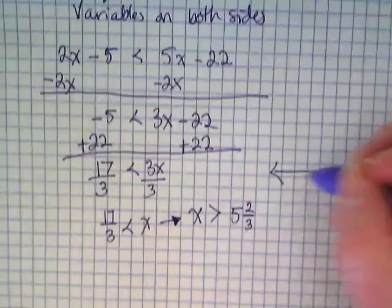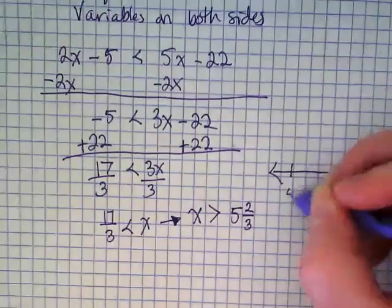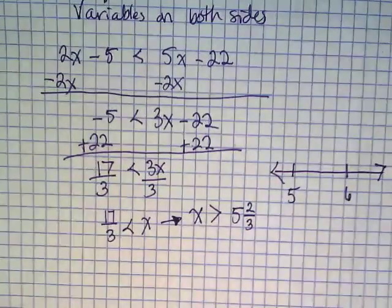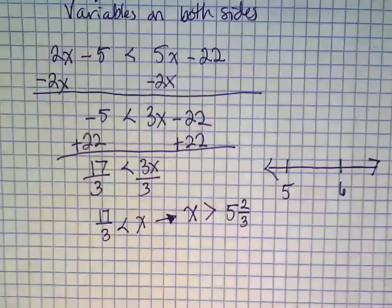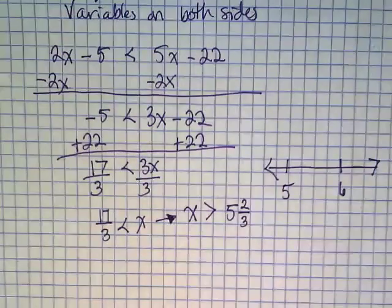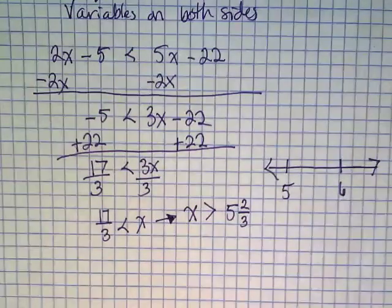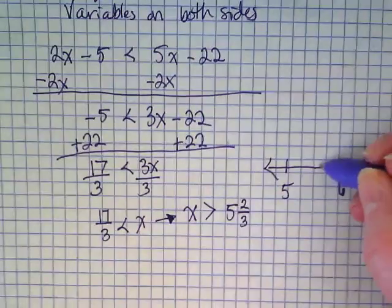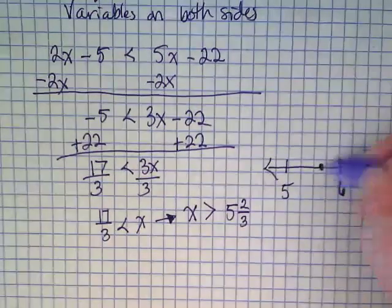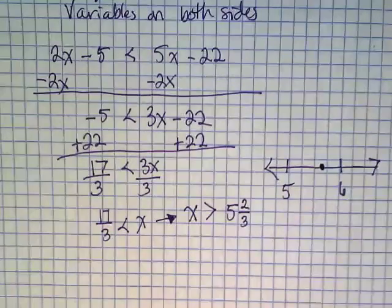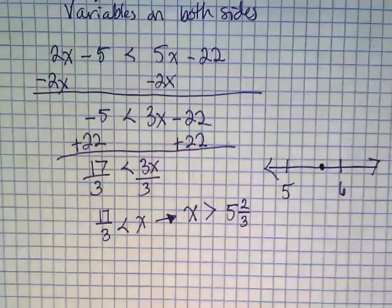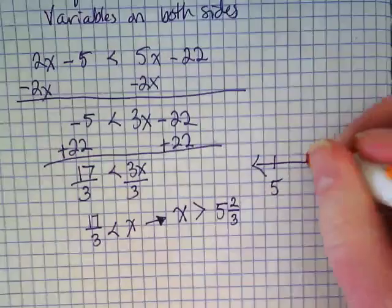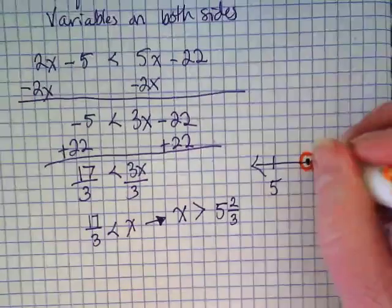When I have a fraction, I'm just going to put 5 and 6 on my number line. Where is 5 and 2 thirds going to fall? Right about in the middle. Kind of to the right. It's going to be about 2 thirds of the way from 5. And I'm going to circle it.